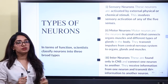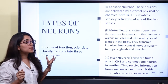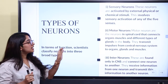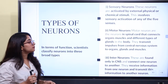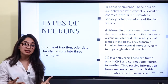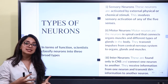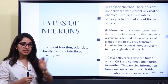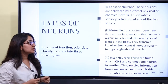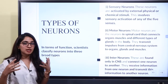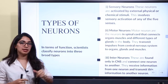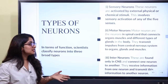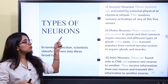Motor neurons are neurons located in the spinal cord. They connect organs, muscles, and different types of glands in the body. Motor neurons transmit impulses from the central nervous system (CNS) to organs, glands, and muscles.